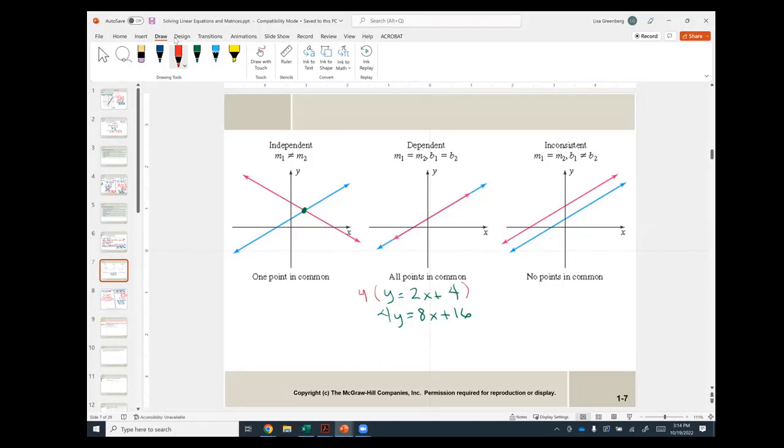So that's why the lines are on top of each other, because they're the same equation. If I draw them, I'll have two lines on top of each other. It has all points in common. These are dependent.